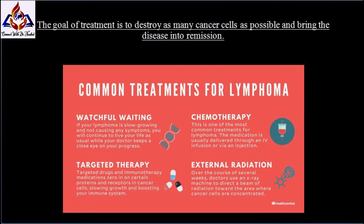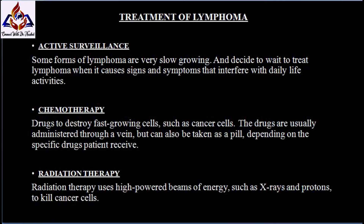The goal of treatment is to destroy as many cancer cells as possible and bring the disease into remission. Common treatments for lymphoma include watchful waiting, chemotherapy, targeted therapy, and external radiation. In active surveillance, some forms of lymphoma are very slow-growing, and you and your doctor may decide to delay treatment until it causes signs and symptoms that interfere with daily activities. Until then, you may undergo periodic tests to monitor your condition.